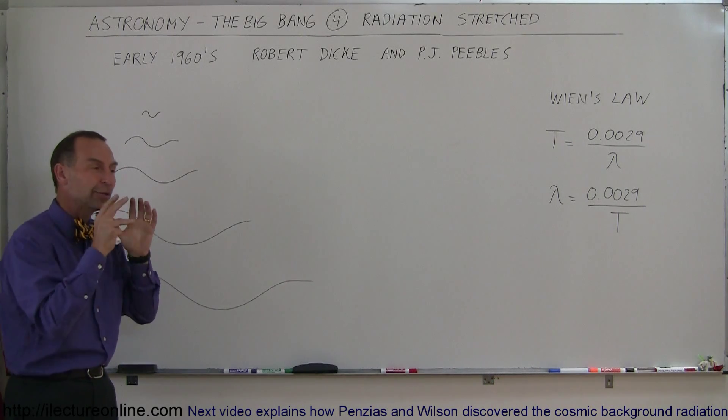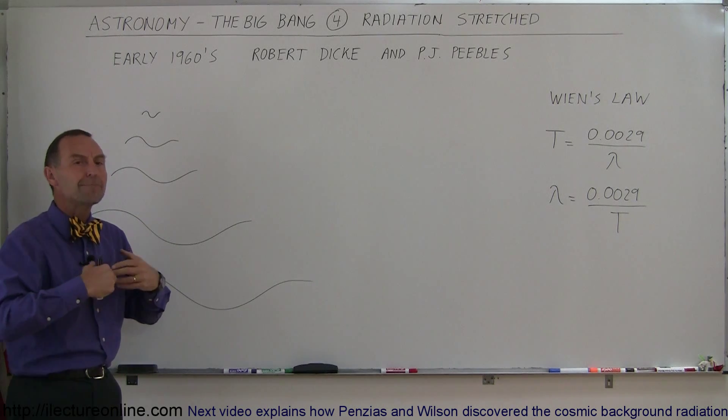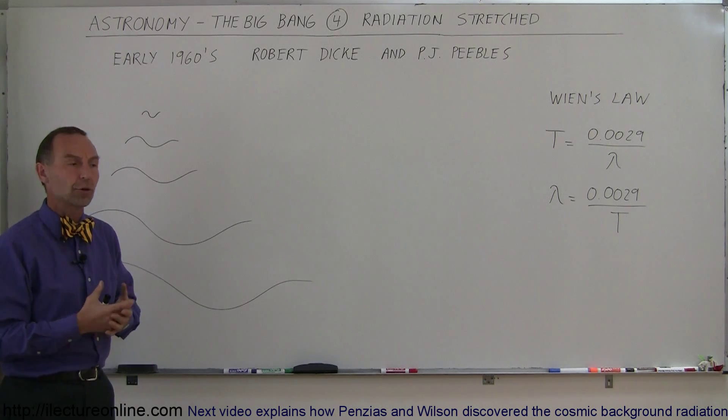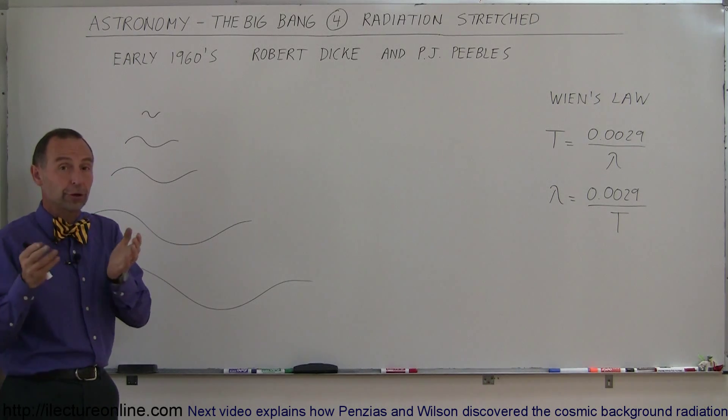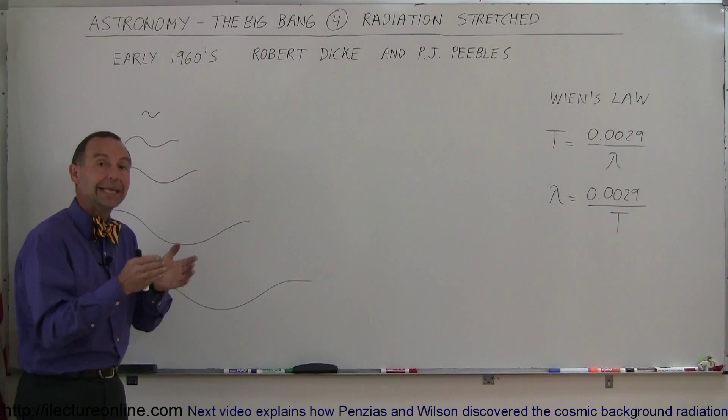All the way to the very beginning, where it must have been many, many millions of degrees in temperature for this nuclear fusion process to take place within the universe, converting a quarter of all the hydrogen into helium.